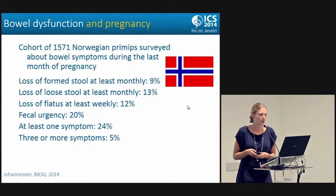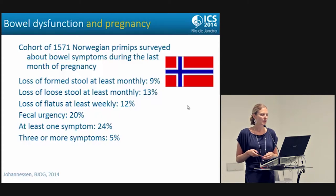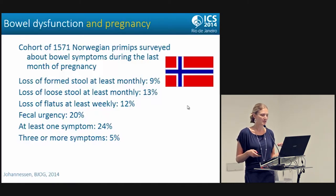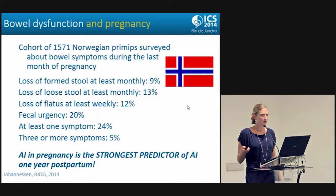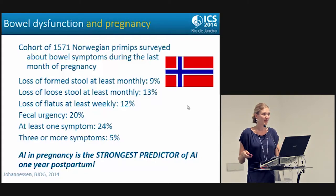I want to talk about the relationship between obstetrics and bowel dysfunction. In a Norwegian cohort of almost 1,600 primips surveyed about bowel symptoms in their last month of pregnancy: almost 10% had loss of formed stool at least monthly, 13% had loss of loose stool at least monthly, 12% had loss of flatus at least weekly, and 20% had fecal urgency. A quarter had at least one symptom and only 5% had three or more. The key take-home is that having anal symptoms during pregnancy is the strongest predictor of anal incontinence one year postpartum. We should be asking about bowel symptoms at the 36–38 week visit.